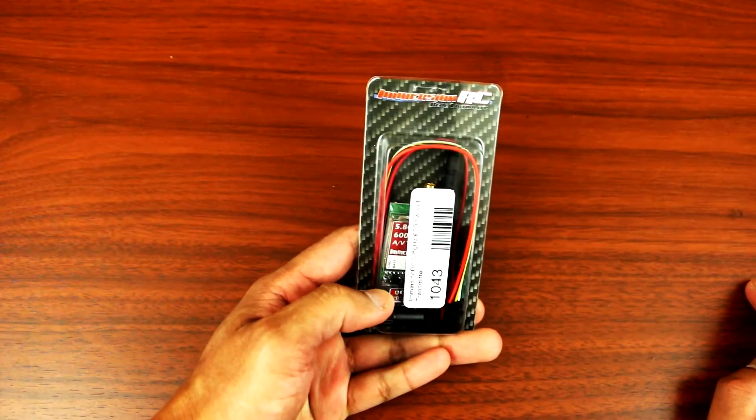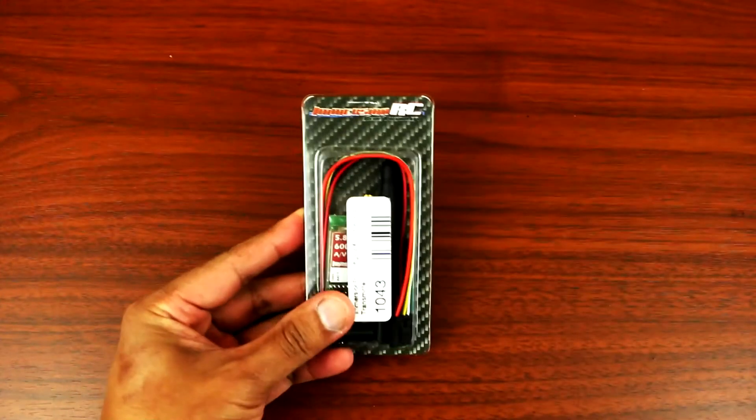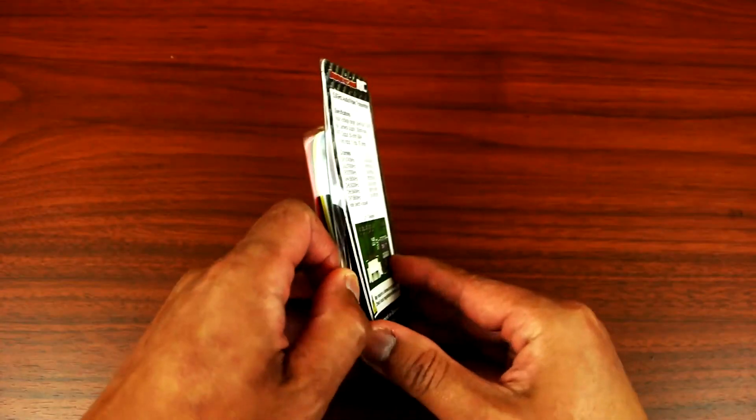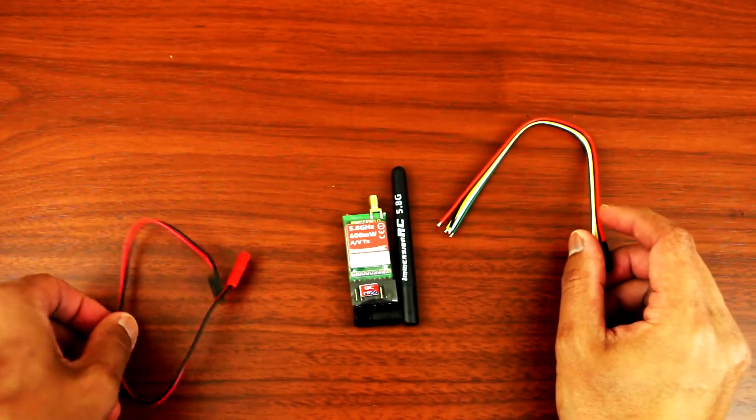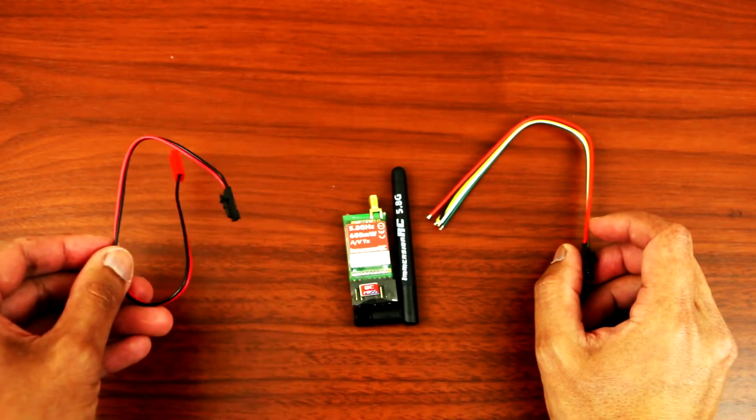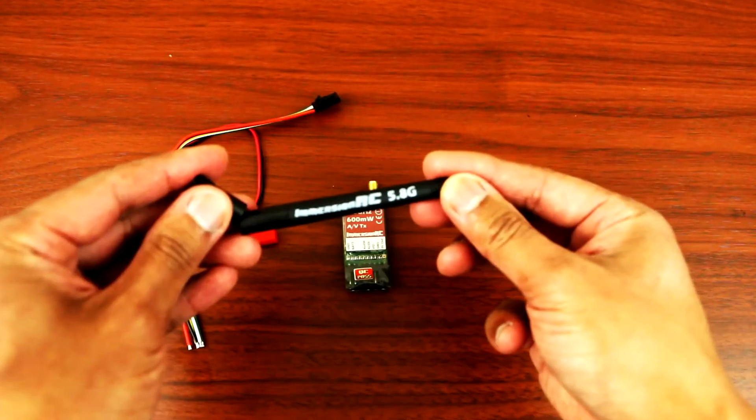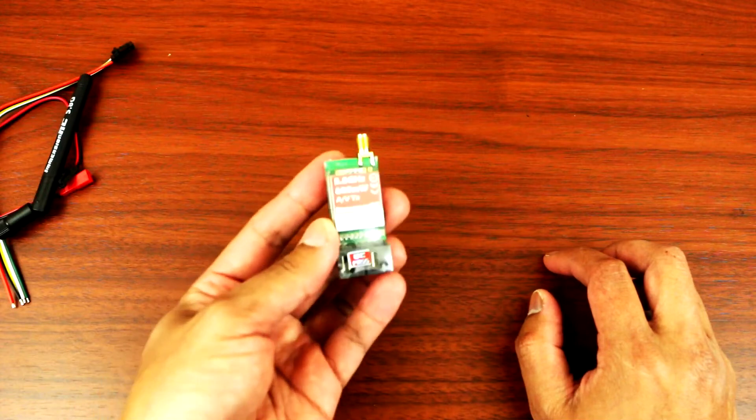Now let's unbox the Emerson RC transmitter. This is the one that I will be installing. Again, it comes with exactly the same thing as the FatShark. You have your antenna, Emerson RC, and the transmitter itself.